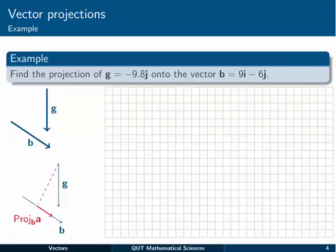Let's look at a specific example. We want to find the projection of g equal to minus 9.8j onto the vector b equal to 9i minus 6j.